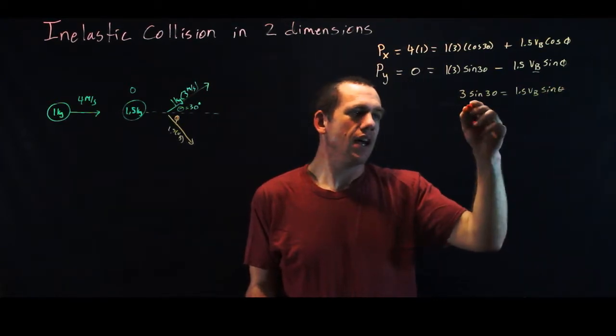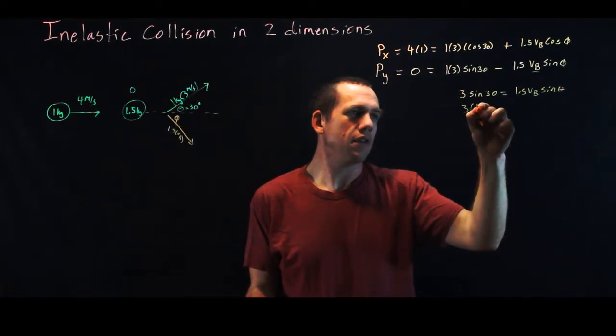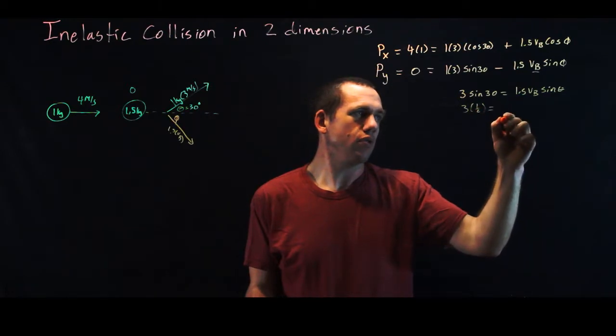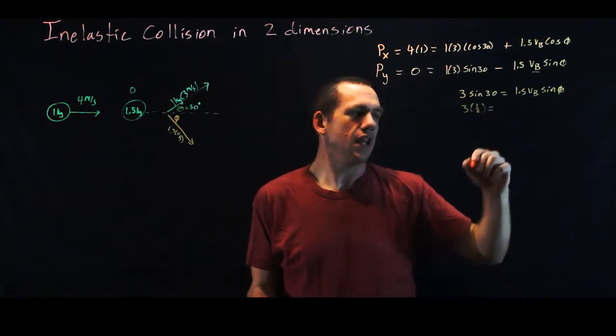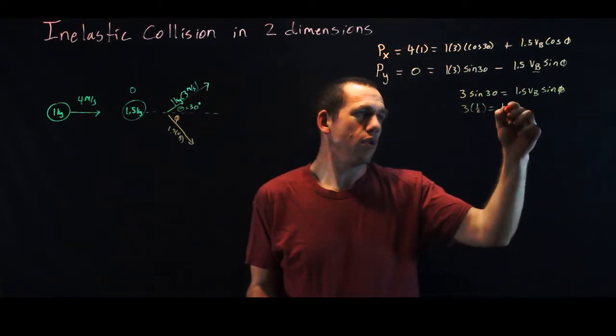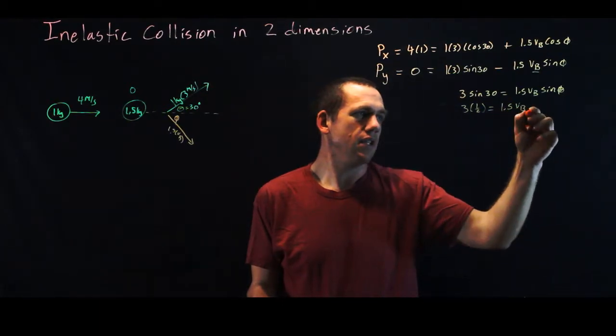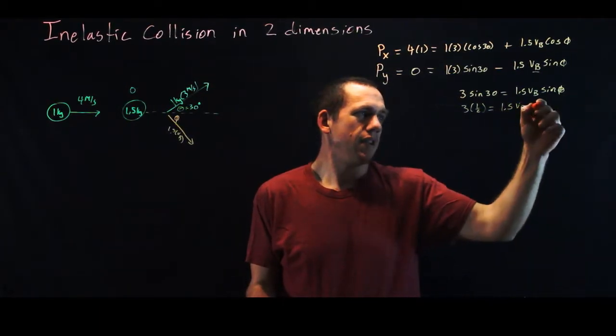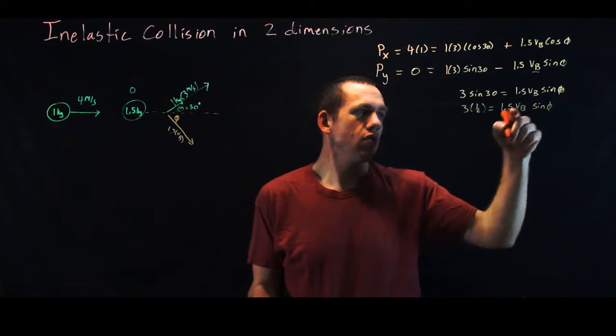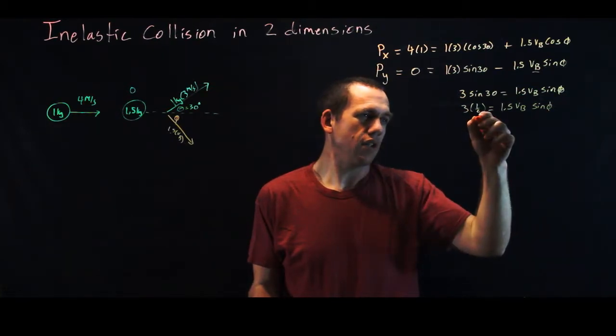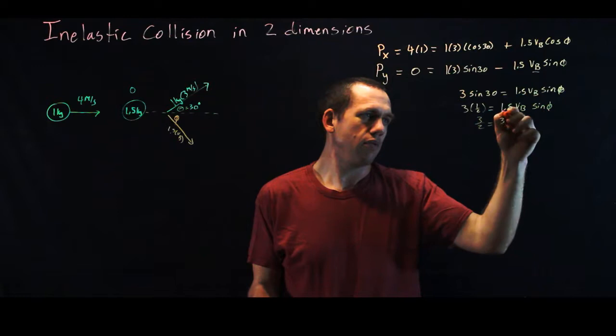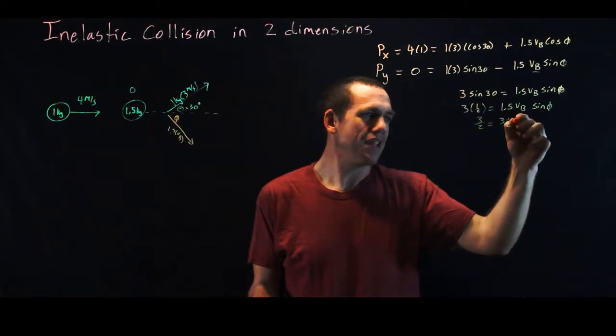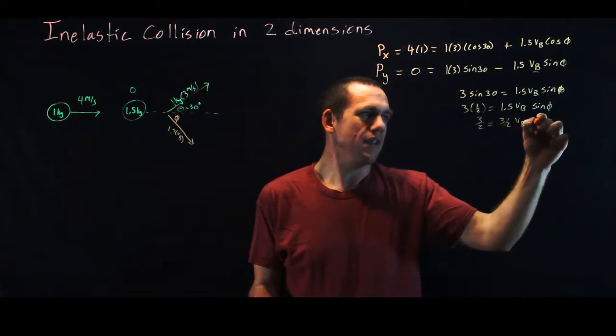Sine of 30 is a half, so I have 3 times a half is equal to, this is phi not theta, 3 times a half is equal to 1.5 vb sine phi. And so multiply this, we get 3 halves equals, right, 1 and a half is still 3 halves, vb sine phi.